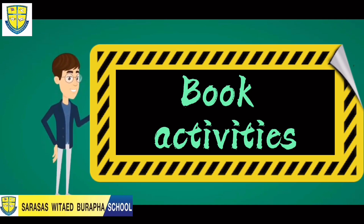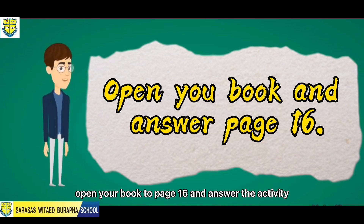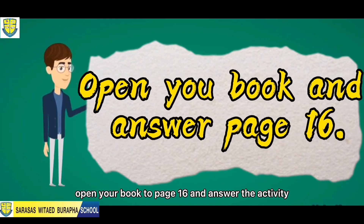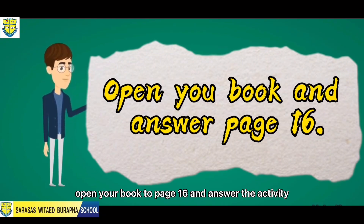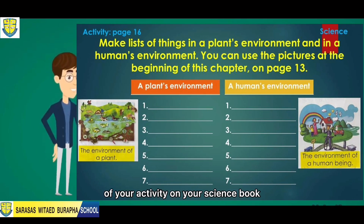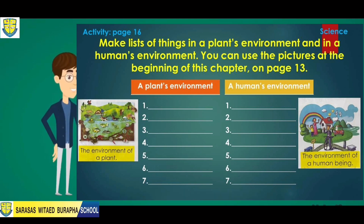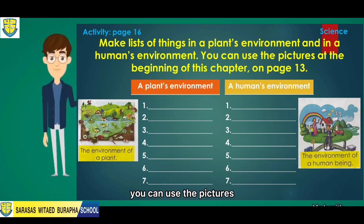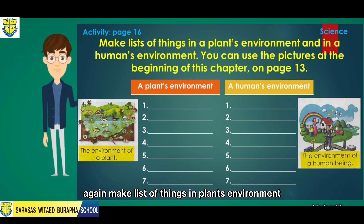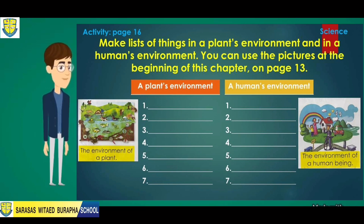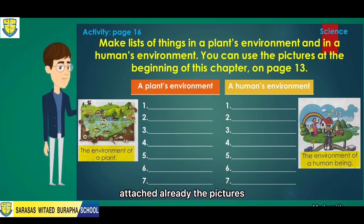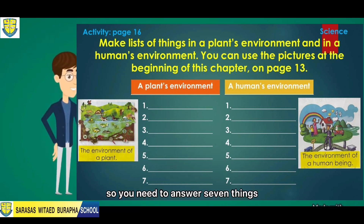Now we are ready to answer your book activities. Please open your book to page 16 and answer the activity. Here are the questions: make a list of things in a plant's environment and in a human's environment. You can use the pictures at the beginning of this chapter on page 13. You need to answer 7 things, either biotic or abiotic factors.